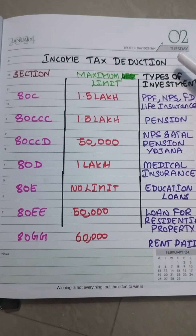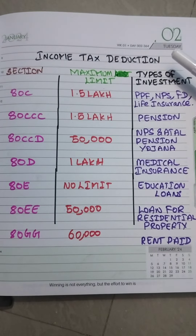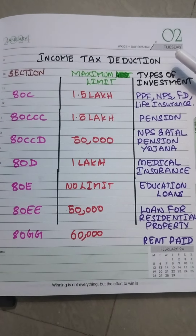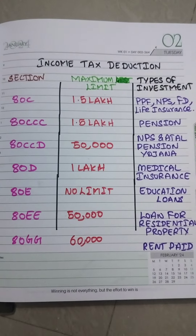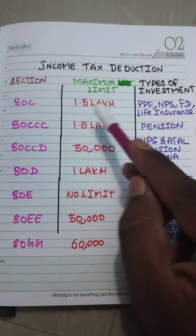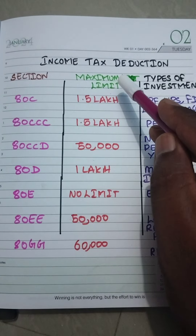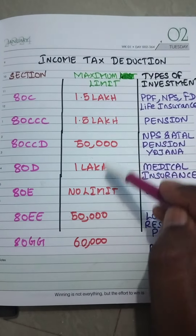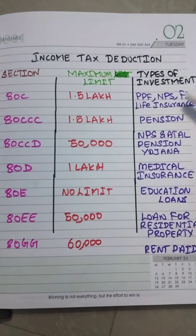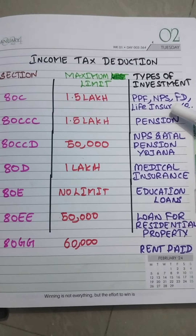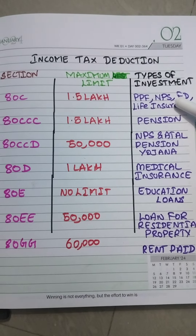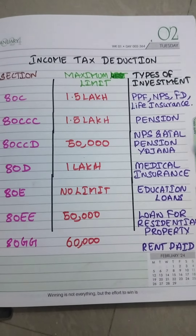In the next few months, we are going to file income tax returns. For that, what are the sections available, what is the maximum limit given there, and what are the investment proofs we can submit to ensure that we have submitted the proper income tax return file.